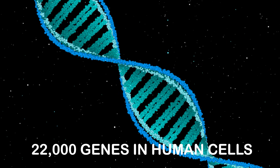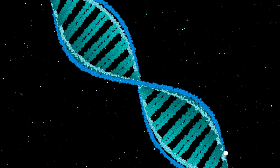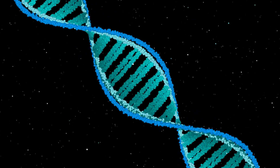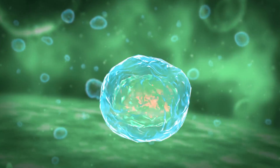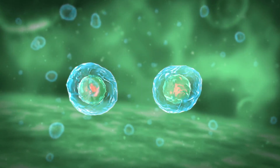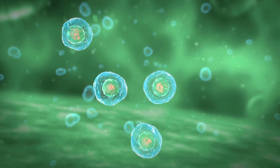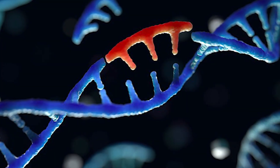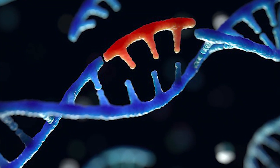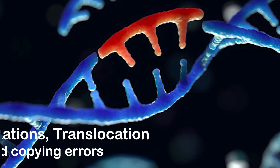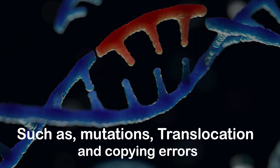Of the approximately 22,000 genes in human cells, several hundred are involved in the process of cell division. These genes ensure that division occurs in an orderly, controlled manner, that each step occurs in the right order at the right time with the right prompts and the right pace, and that after a certain number of divisions the cell dies. Sometimes a gene will acquire an abnormality that interferes with its ability to function, which can take several forms such as mutations, translocation, and copying errors.